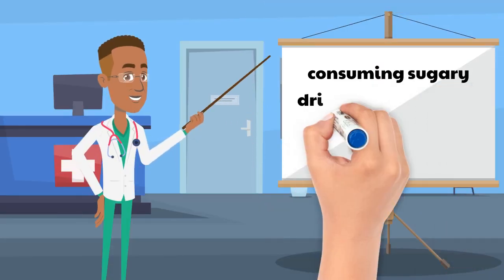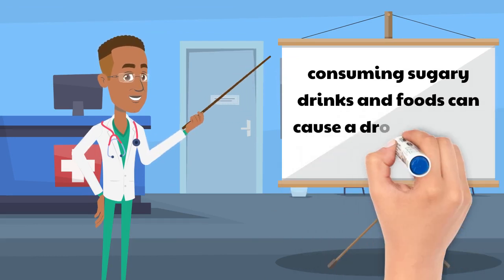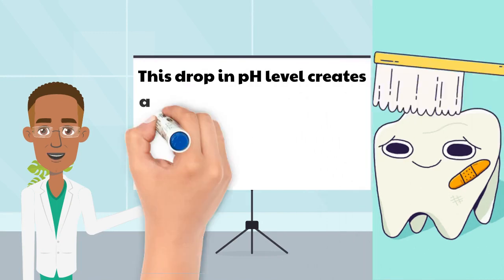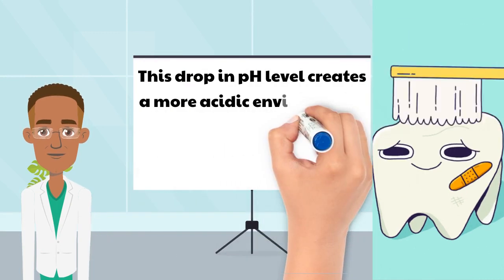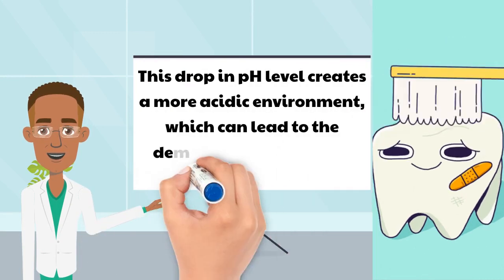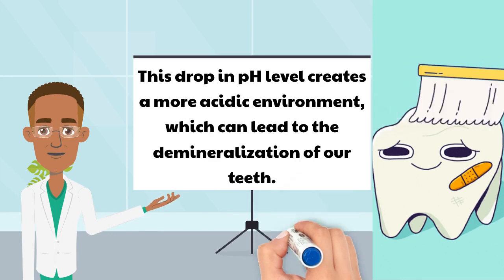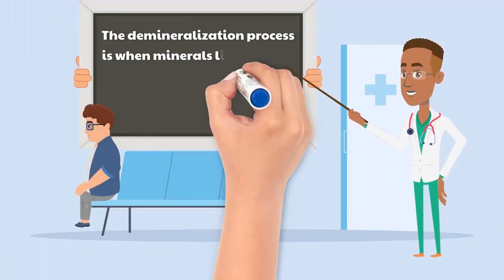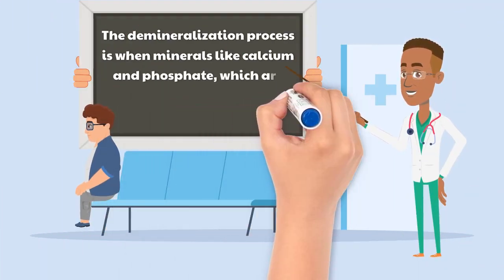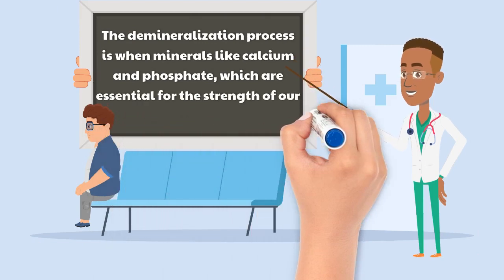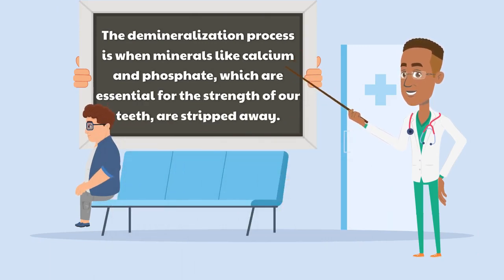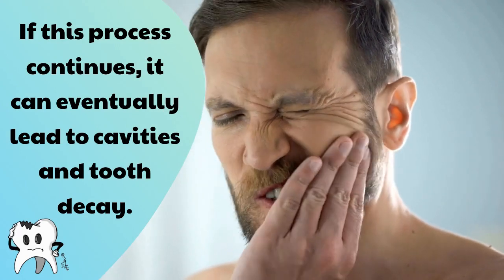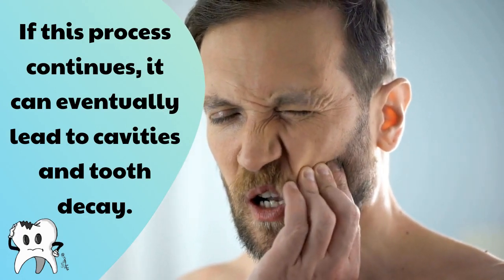Furthermore, consuming sugary drinks and foods can cause a drop in the pH level of our mouth. This drop in pH level creates a more acidic environment, which can lead to the demineralization of our teeth. The demineralization process is when minerals like calcium and phosphate, which are essential for the strength of our teeth, are stripped away. If this process continues, it can eventually lead to cavities and tooth decay.